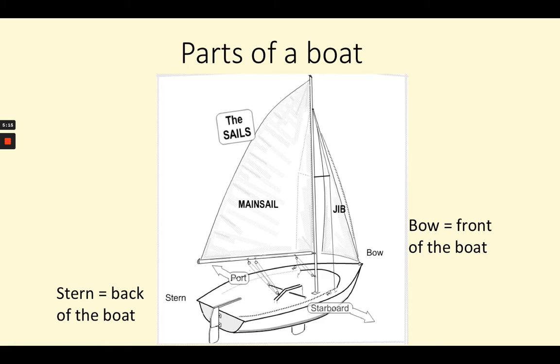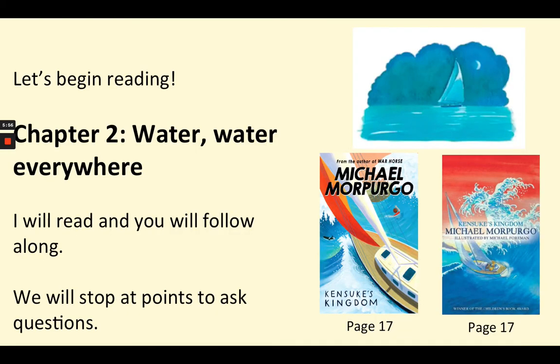Before we get reading, let's take a look at this image of a sailboat. The Peggy Sue is a sailing yacht, and we're going to hear a lot about the bow and the stern. The bow of a boat is the front, and the stern is the back. You can also see the words port and starboard. The port side is the left-hand side, and the starboard side is the right-hand side.